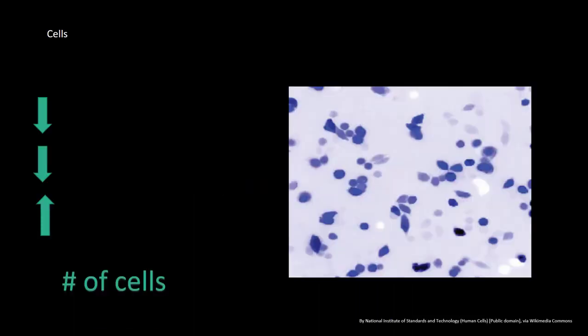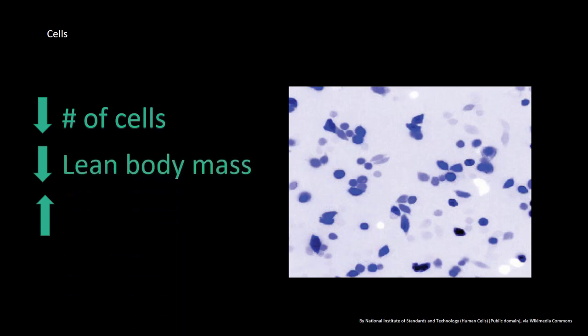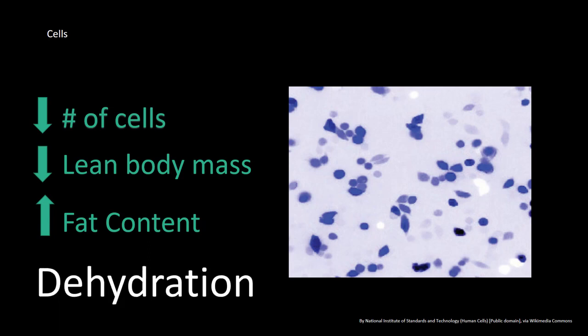As we age, the total number of functional cells in our body will decrease. Muscle and bone mass will decrease and this will lead to a decrease in lean body mass. With this decrease in lean body mass will come an increased proportional amount of fat within our bodies. We will also experience a decrease in total body water, which in turn will make older adults much more susceptible to dehydration.